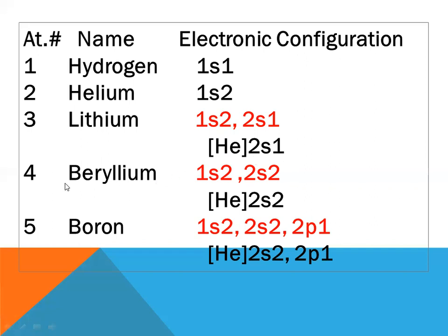Beryllium, atomic number four: 1s2 2s2. Instead of 1s2 we can place helium, and write the electronic configuration as [He] 2s2. Boron, atomic number five: 1s2 2s2 2p1. We replace 1s2 with helium, giving [He] 2s2 2p1.